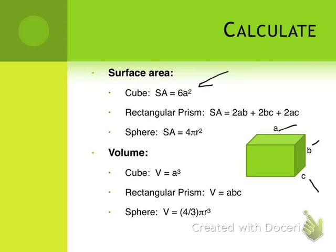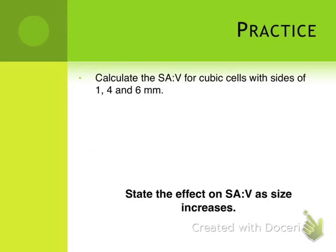You'll notice that for volume, it is a cubed value. When we think about the increase of these two measures, surface area is going to increase at a squared rate, while volume is going to increase at a cubed rate. So as size increases, volume is going to increase faster than surface area.